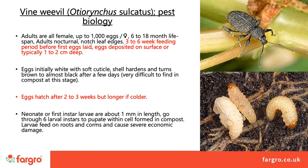Vine weevil has become a major pest again due to the loss of certain pesticides, so an integrated approach to their control is really needed. Adults are all female and can lay up to about a thousand eggs, although most of these will never survive to become adults. The long lifespan of the adults means that egg laying can commence early in spring. The eggs are laid at random and, although white to begin with, soon darken and become very difficult to spot.